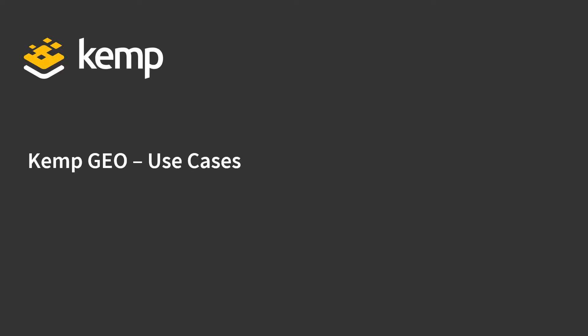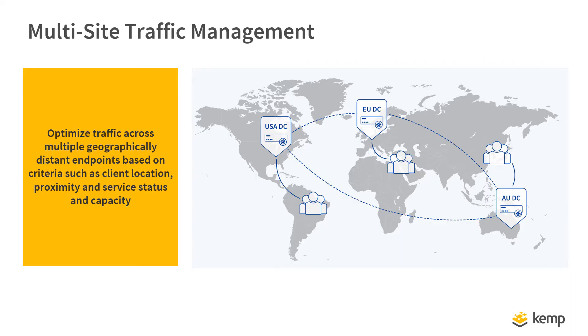Let's look again at the use cases in the context of KEMP Geo global server load balancing. In a global multi-site scenario, client traffic can be directed to the optimum service based on client location and service availability metrics. This provides a better client experience, as traffic is not travelling around the globe unnecessarily, and it also provides resilience in the event of a site outage.